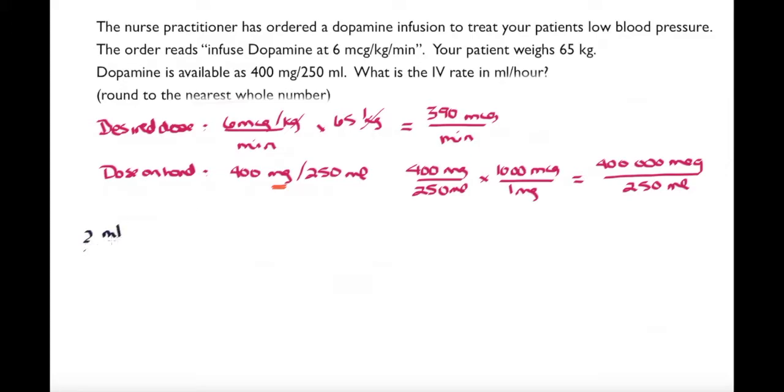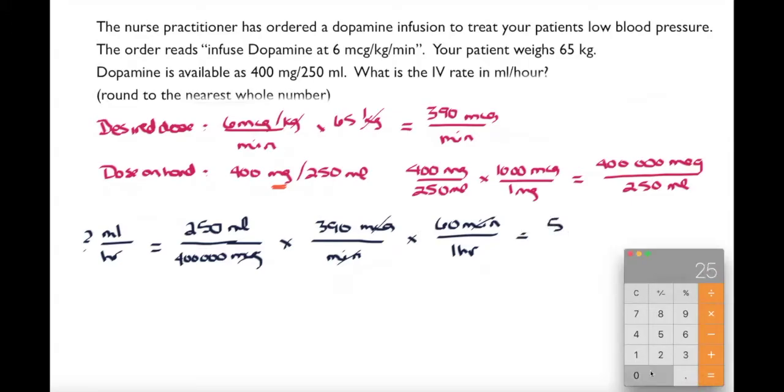The next thing I'm going to do is put this into my equation. I'm looking for mils per hour. I know I have 250 mils and in that is 400,000 micrograms. I'm looking for a dose of 390 micrograms, and the goal here is to cross off micrograms. I have that in every minute. I need to do a time conversion from minutes to hours so that I can get my answer in mils per hour.